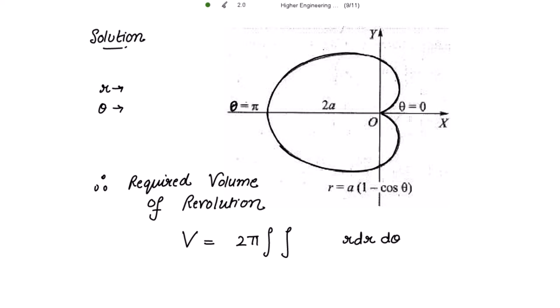So this is your cardioid r equal to a into 1 minus cos theta. Since the upper and the lower halves of the cardioid generate the same volume, we consider the revolution of the upper half only.